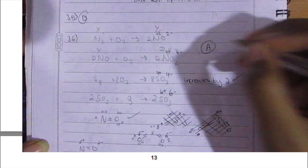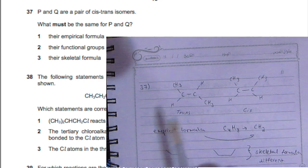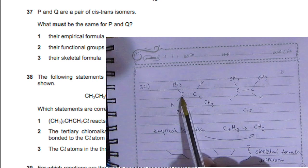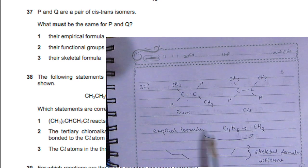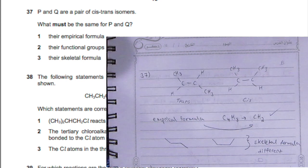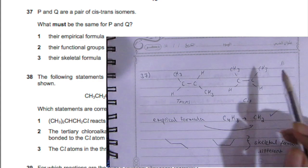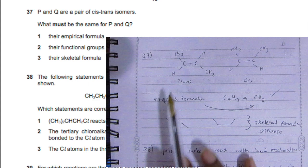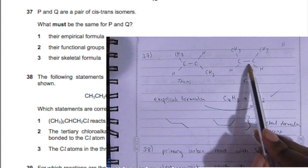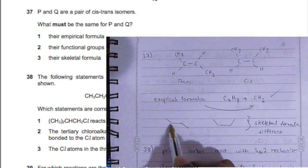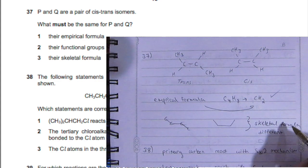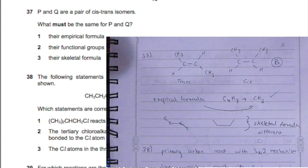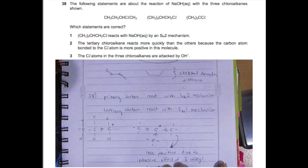Question 37: P and Q are a pair of cis-trans isomers. What must be the same? I drew a simple example—trans having elements on opposite ends and cis adjacent to each other. Their empirical formula is the same: four carbons, eight hydrogens simplifies to CH2. Their functional groups are the same. Their skeletal formula is not the same—when you draw the carbons, they look different. One looks like a stair and the other like a bowl. Options one and two are correct, so B is your answer.